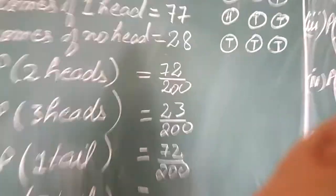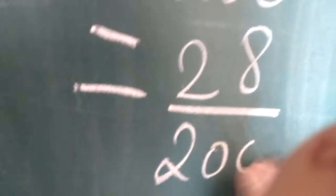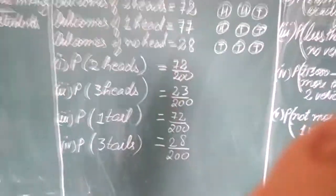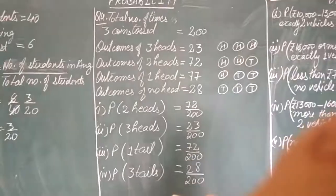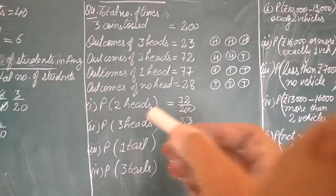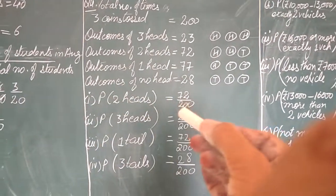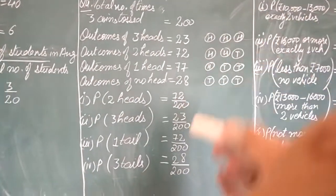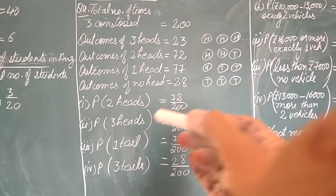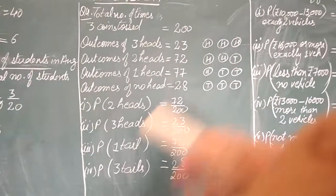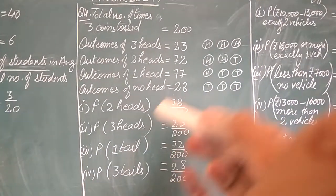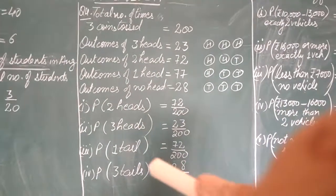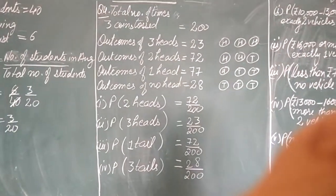So in this way, dear students, many more questions can be asked from this question. Do not only stick to the given question — you must understand the concept of the remaining parts also. Try some more: like probability of 2 tails, 2 heads, 0 heads. Many more questions can be asked from this.